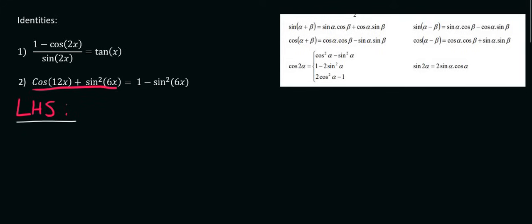Now what I immediately see is that on the left hand side we have a cos and it's got a 12x. So we know that we're going to use one of these double angle identities.